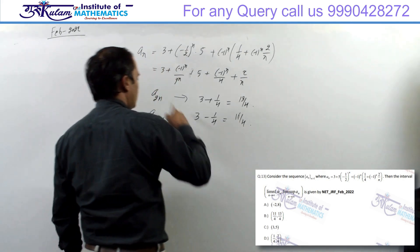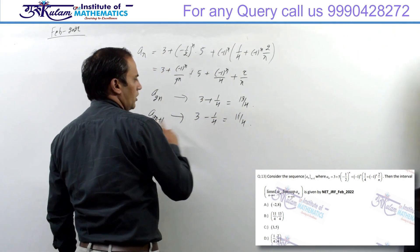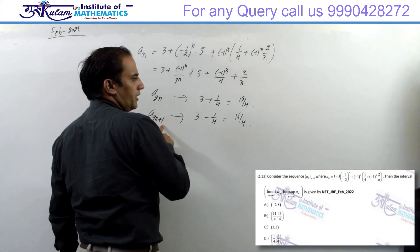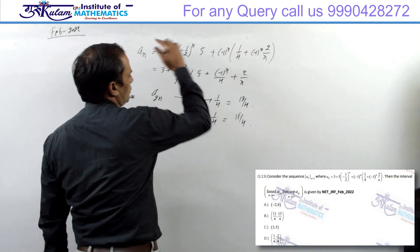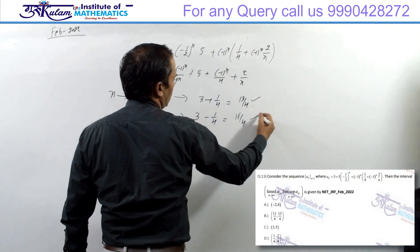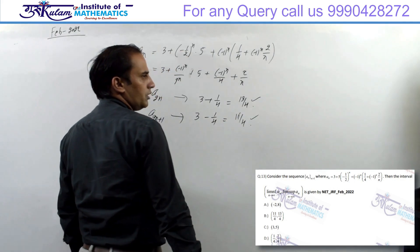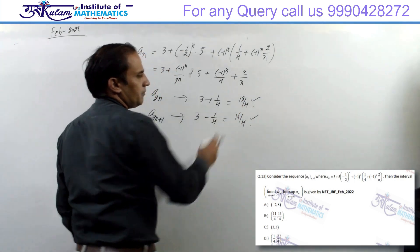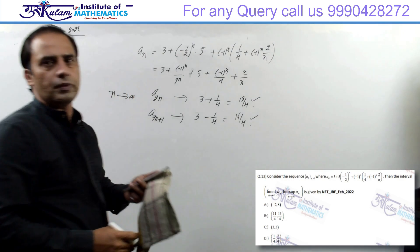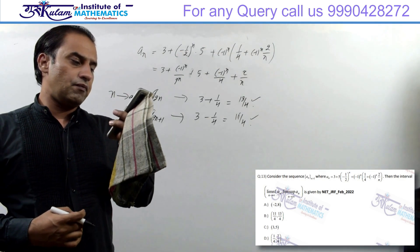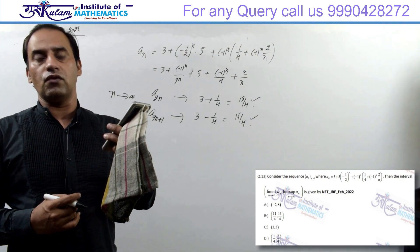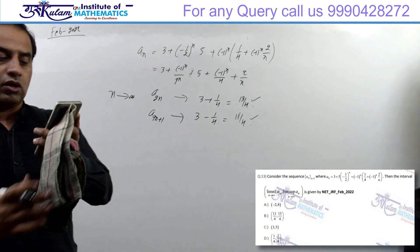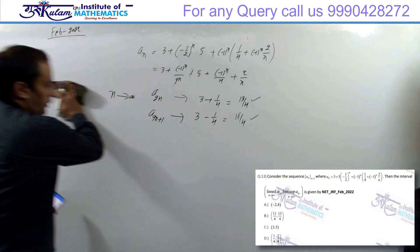यह even term का sequence converge कर रहा है और odd term का sequence converge कर रहा है, और ये दोनों complementary subsequences हैं। इनके limit points हैं 13/4 और 11/4। Smallest limit point यानी inferior is 11/4 और largest limit point यानी superior is 13/4। तो option B answer है, remaining all are false।